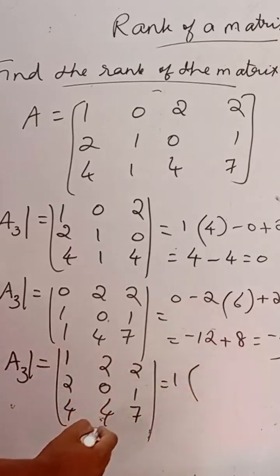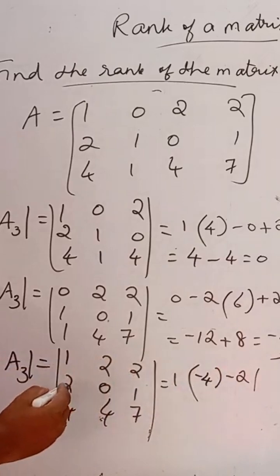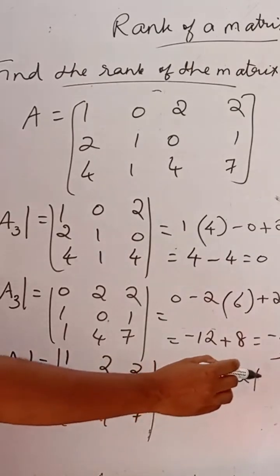Here we will get 1 into 0 minus 4. That is minus 4. Then minus 2 into 7. That is 14 minus 4. That is 10.